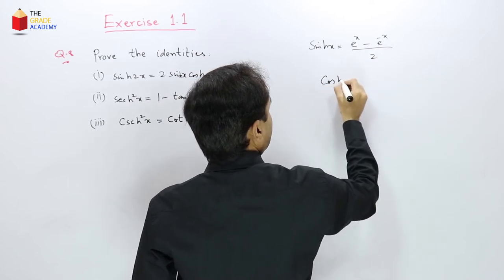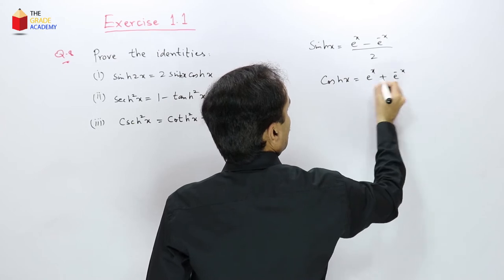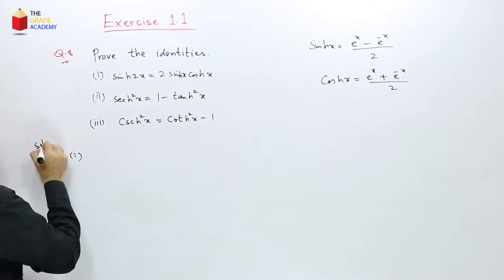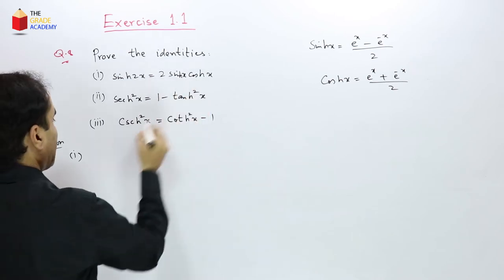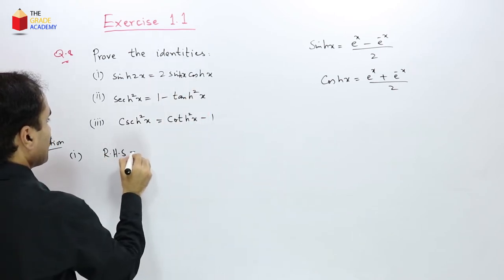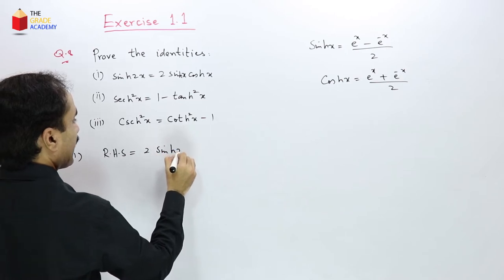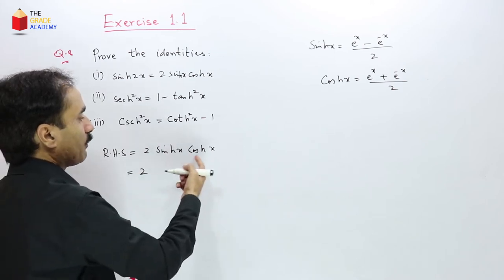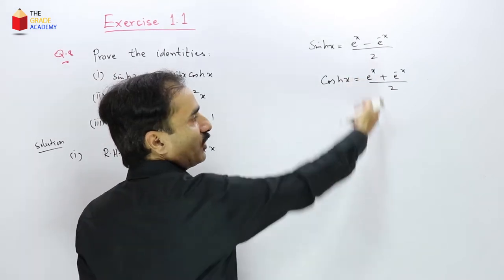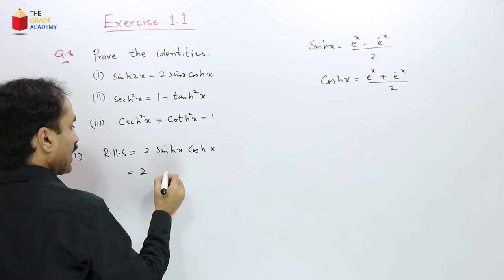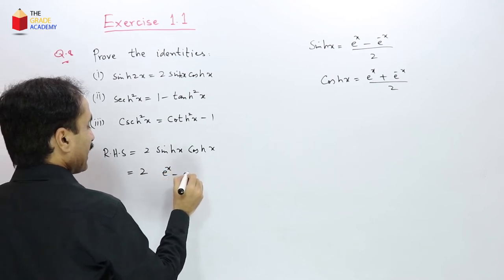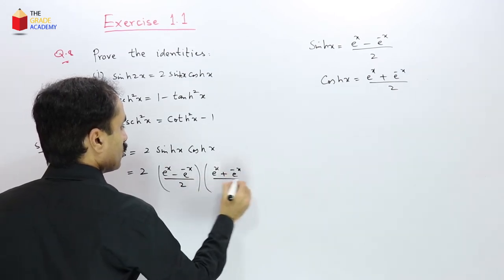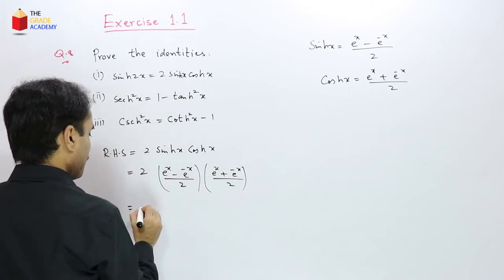For the first identity, we take the right-hand side: 2·sinh(x)·cosh(x). We substitute the exponential definitions: sinh(x) = (eˣ − e⁻ˣ)/2 and cosh(x) = (eˣ + e⁻ˣ)/2, then multiply and simplify.